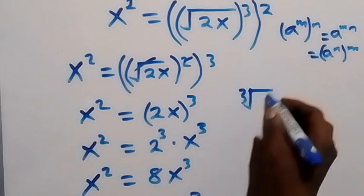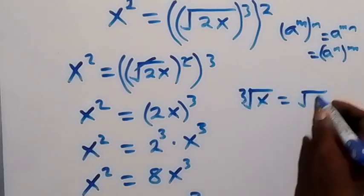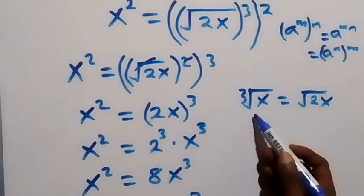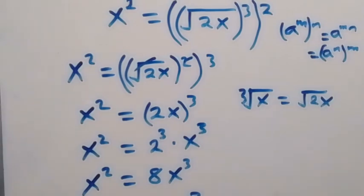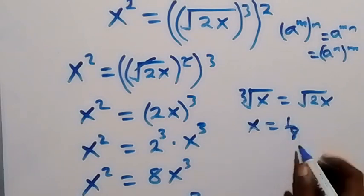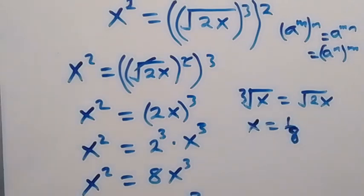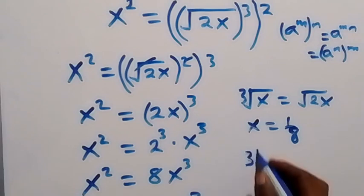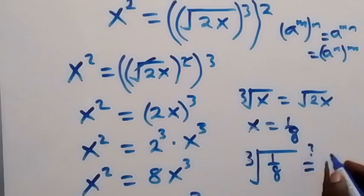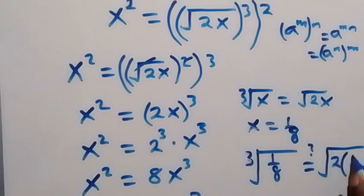Now let's verify using the original equation: cube root of x equals square root of 2x. For x equals 0, it is obvious that 0 equals 0 on both sides. For x equals 1 over 8, substituting gives cube root of 1 over 8 on the left, and square root of 2 times 1 over 8 on the right.